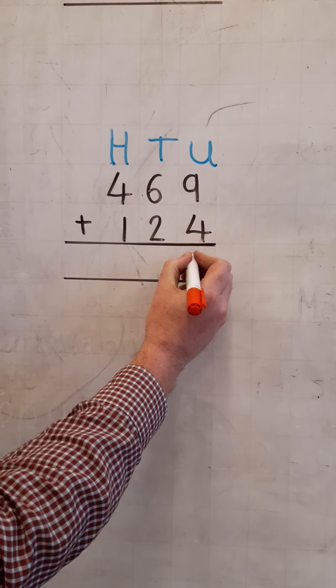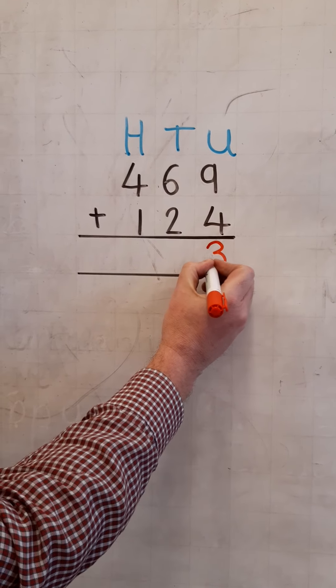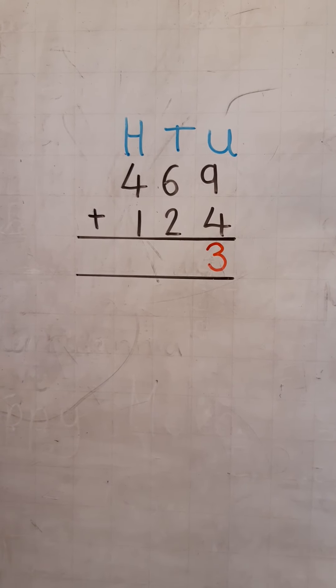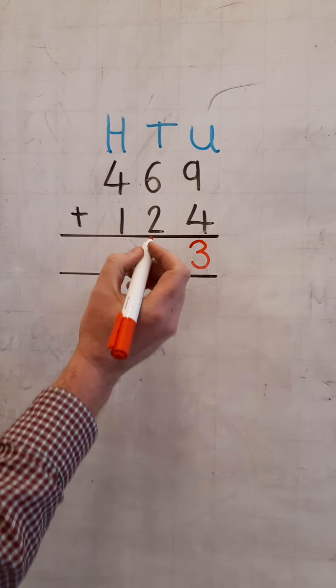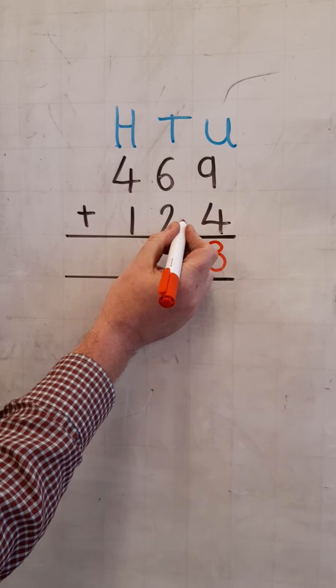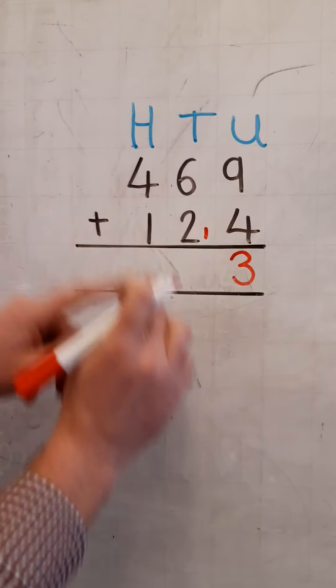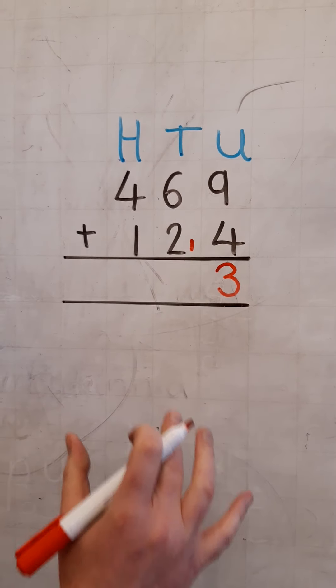So the three units, that's fine, comes here. The one ten, where's it going to go? I think you know, it's going into the tens place to wait, because I've not added all the tens yet. I've not got them all together yet.